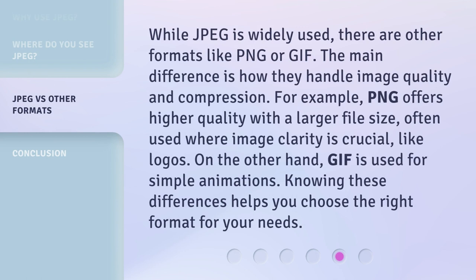While JPEG is widely used, there are other formats like PNG or GIF. The main difference is how they handle image quality and compression. For example, PNG offers higher quality with a larger file size, often used where image clarity is crucial, like logos. On the other hand, GIF is used for simple animations. Knowing these differences helps you choose the right format for your needs.